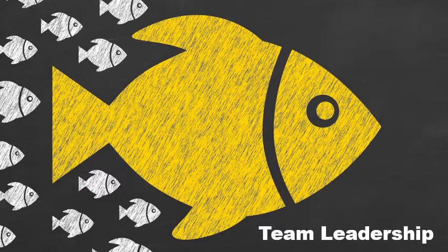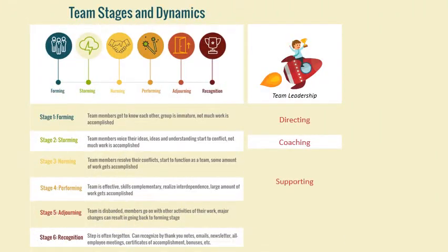Accompanying each of the team stages and dynamics is the role of the team leader. The team leader has a role in each of the stages of team development. In stage one, the forming stage, the leadership role is directing — coordinating and directing the team. As the team approaches the storming phase, that's when the team leader moves into coaching. As the team moves into norming, the leader is there really just for a supporting aspect. And when the team matures into performing, the leader's role is delegating, because a large amount of work is being accomplished and we need to make sure that everyone has the appropriate amount of work to complete.